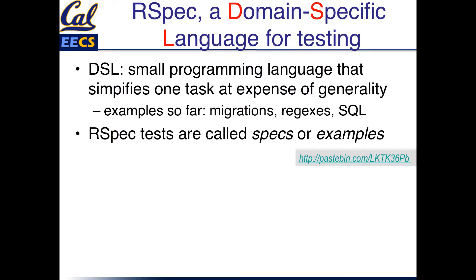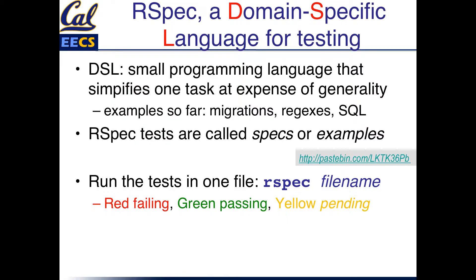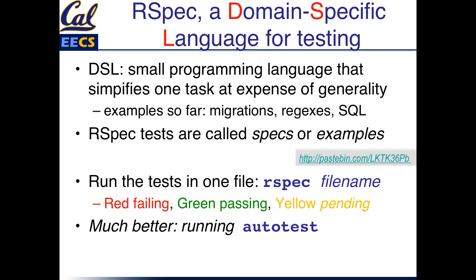RSpec tests are called specs or examples, and each spec tests one behavior. One way to run the test file is to run the RSpec command against a particular file name. You'll see error messages printed in red for tests that fail, tests that pass shown in green, and pending tests shown in yellow. A large project could have thousands of test cases across hundreds of files, so instead we prefer using Autotest — a tool that runs all your RSpec tests and, any time you make a change to test or app code, figures out which tests need to be rerun and automatically does that.